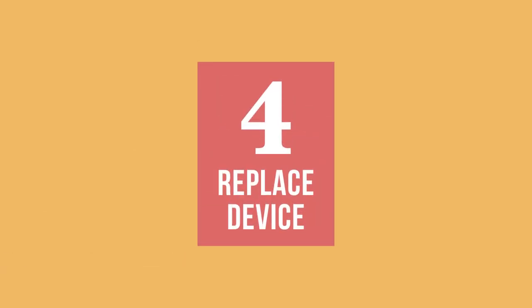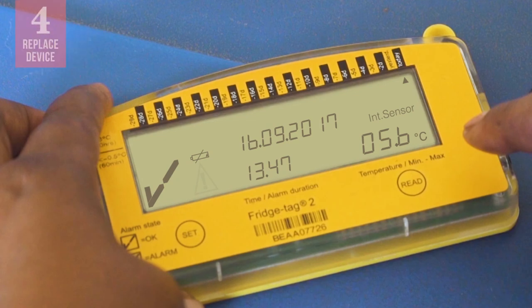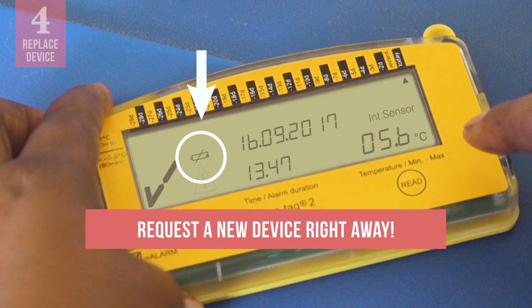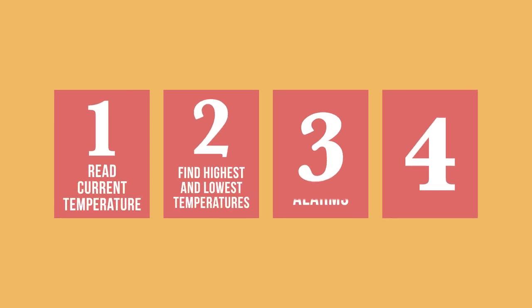Finally, the last important task is to recognize when you need a new device. If you see a symbol on the screen of your device that looks like this, it means the battery in your device is running low, and that means you need to request a new device right away, since you cannot replace the battery in a fridge tag. By performing these four important tasks every day, you will be able to better monitor temperatures in your vaccine refrigerator.